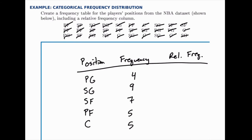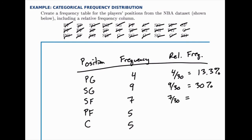For the relative frequency of point guards, we would divide four by 30, which we could write as a fraction, or as a decimal, which comes out to about 0.133 or 13.3%. Then for shooting guards, we divide nine by 30, which works out to 30%. Seven out of 30 is 23.3%. And then five out of 30 is about 16.7%, and that's for both of the last two categories.